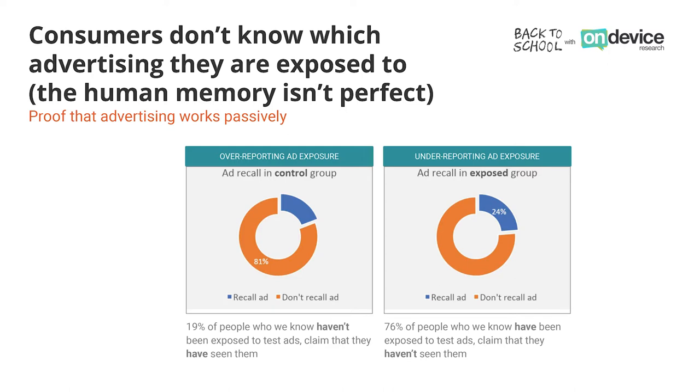Thank you Lisa. So traditionally out-of-home advertising effectiveness has been done using recall — so either someone recalled the actual advertisement, or someone recalls being in a certain location where the creative was on. I firmly believe though that basing it on recall isn't robust enough. When you're measuring out-of-home exposure, you have to measure it passively. For example, when we look at On-Device Research norms, we know using tracking technology that 19% of people who haven't been exposed to advertising claim to have seen it. And equally, we also know that only 24% of people who we know have been exposed to advertising actually do recall it.